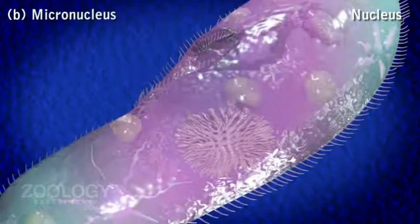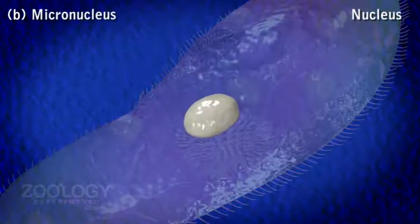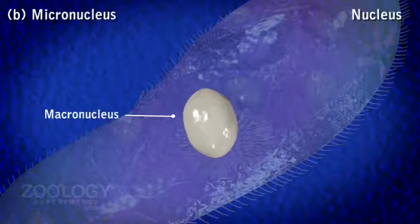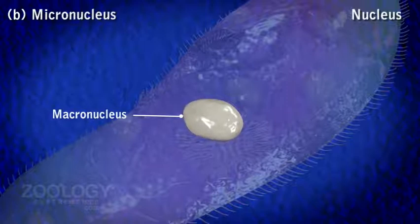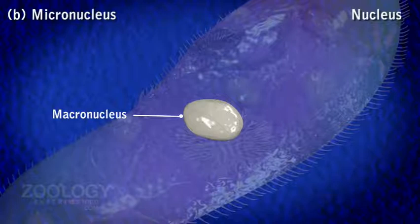Micronucleus: The micronucleus is situated in a depression on the surface of the macronucleus. It is usually spherical with a nuclear membrane and a diploid number of chromosomes. In Paramecium caudatum, the nucleolus is absent. It controls the reproductive activities of the organism.